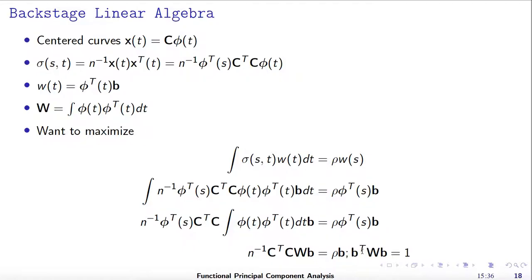We need to do a small trick here. We define W to the one-half times b equal to a new vector eta. Then this becomes a regular eigen decomposition problem, and we can find b based on the eigen decomposition. This is how we compute the FPC.